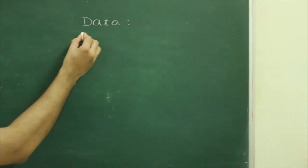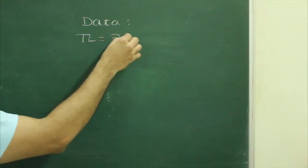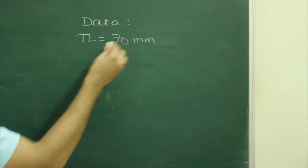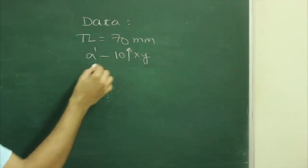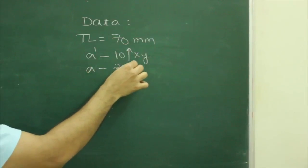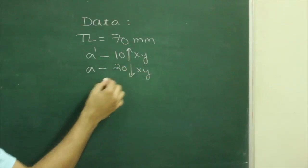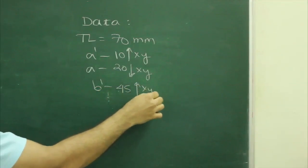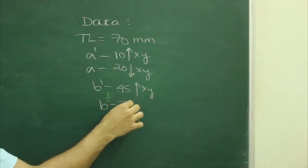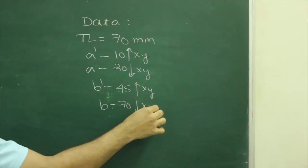First we will write the given data. Through length 70 mm, A dash 10 mm above x by 9, A 20 mm below x by 9, B dash 45 mm above x by 9, and B 70 mm below x by 9.